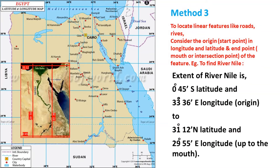Method 3: to locate linear features like roads or rivers, we consider the origin point (start point) in longitude and latitude, and the end point (mouth or intersection point) of the feature. For River Nile, the origin is 0 degrees 45 minutes south latitude and 33 degrees 36 minutes east longitude, extending to 31 degrees 12 minutes north latitude and 29 degrees 55 minutes east longitude at the mouth.